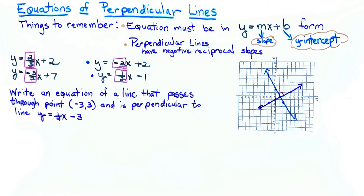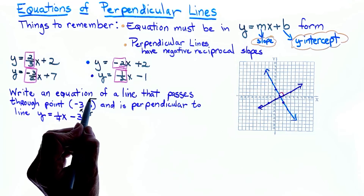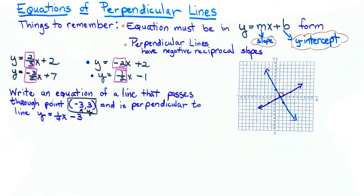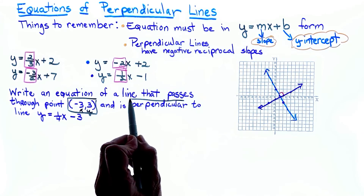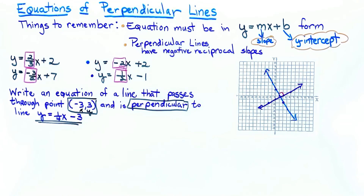If given: write an equation of a line that passes through point (negative 3, 3) and is perpendicular to y equals one-fourth x minus 3. Let's mark the text: it passes through this point — I'll label it x and y — and it must be perpendicular to the given line. We need to find our slope and letter b to write the equation in y equals mx plus b form.